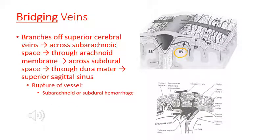Bridging veins are important — they are little veins that connect the cerebral veins to the sinuses. Branches off the superior cerebral vein go through the subarachnoid space, pierce through the arachnoid membrane, cross the subdural space, and enter through the dura mater to dump blood into the superior sagittal sinus. If you have a rupture of a bridging vein, you could have either a subarachnoid hemorrhage or a subdural hemorrhage.